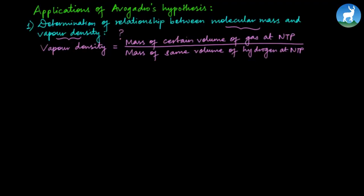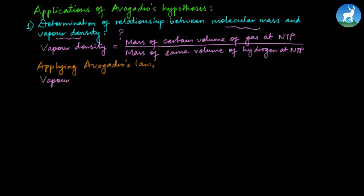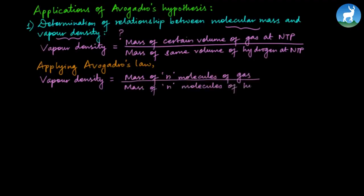According to Avogadro's law, equal volumes of all gases contain the same number of molecules at similar conditions of temperature and pressure. So if we take a gas volume of X, it contains N number of molecules. Similarly, hydrogen at the same volume also contains N number of molecules.